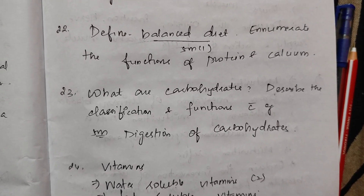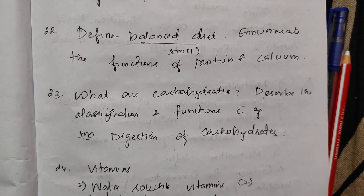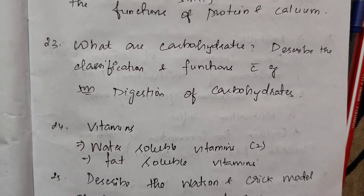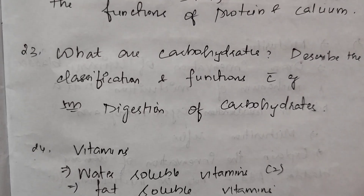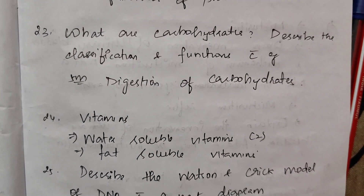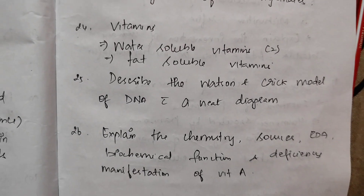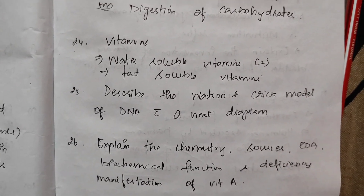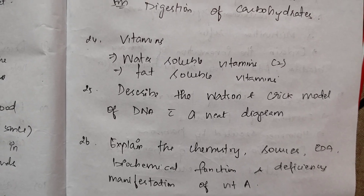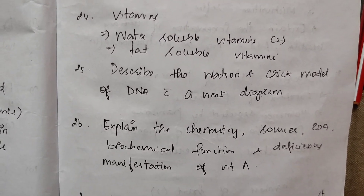Define balanced diet and enumerate the functions of protein and calcium. Balanced diet also in 5 marks. What are carbohydrates? Describe their classification and functions with examples — in 5 marks. Digestion of carbohydrates in 4th question. Vitamins: water-soluble vitamins for 15 marks; fat-soluble vitamins for 15 marks; fat-soluble vitamins also in 5 marks.